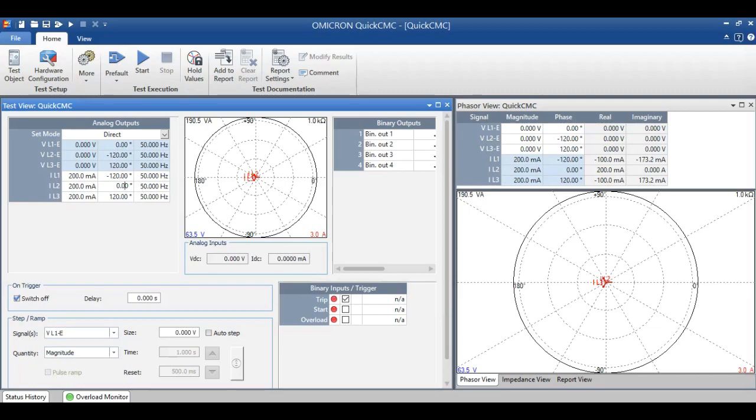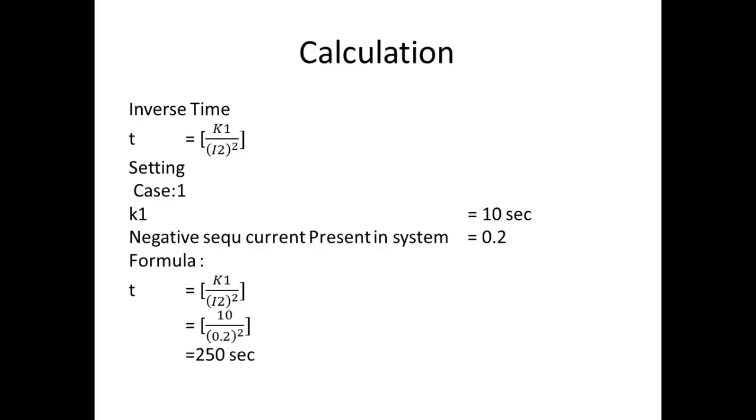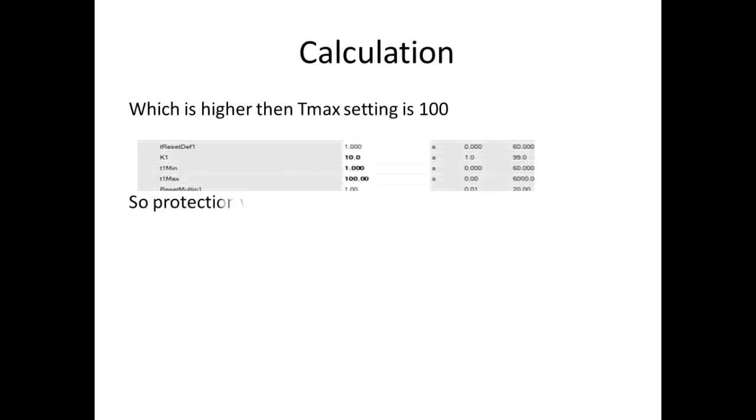But when you inject from the kit our relay will not give trip at 250 seconds but it will trip at 100 seconds because our T max setting is 100. So depending upon this T max setting only it will go for tripping.